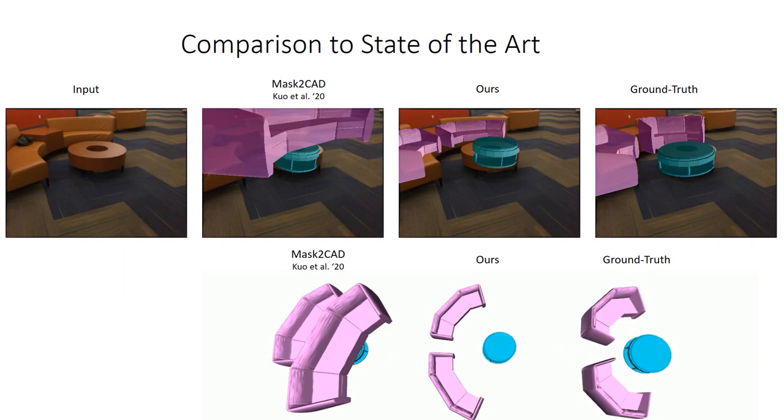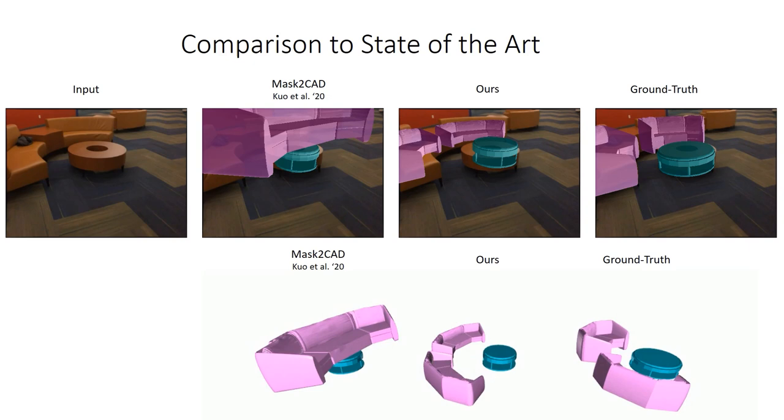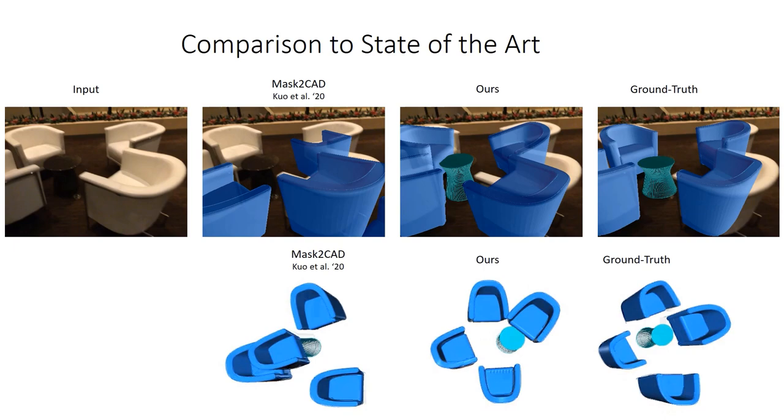We train our method using ScanNet images with Scan2CAD annotations of CAD alignments to the ScanNet data. Compared to the state-of-the-art Mask2CAD, our method achieves more robust and accurate alignments in many challenging scenes.